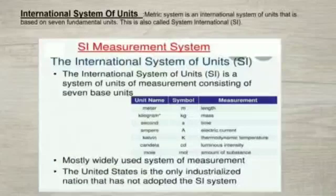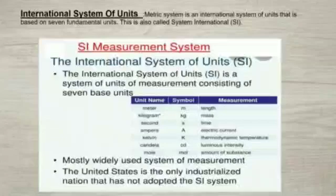Now let's learn about the international system of units. The international system of units is the modern form of the metric system. It is the only system of measurement with an official status in nearly every country in the world. An international system of units based on seven fundamental units, called the System International, is currently used all over the world. It is also called the metric system. The names and symbols of the units of fundamental quantities — length, time, mass — are given in the following table.